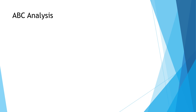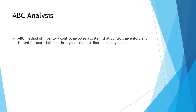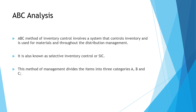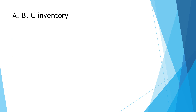Moving on, we'll look at one of the methods used in inventory management — that is ABC analysis. Basically, ABC analysis gives you control over inventory and its distribution system. This method is also called Selective Inventory Control, or SIC. It divides items into three categories — A, B, and C — where A is the most important item and C is the least valuable.